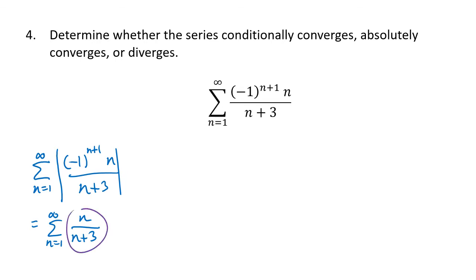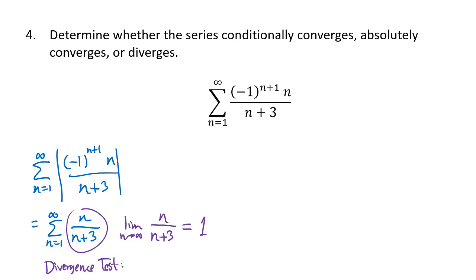Looking at the limit as n goes to infinity of n over n plus three: when n is very large, this is roughly a billion divided by a billion and three, which is close to one. In fact, this limit equals one. By the divergence test, that series diverges.